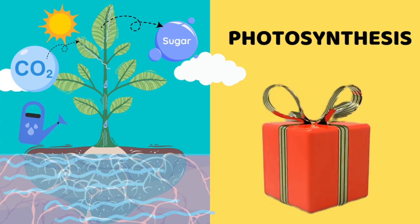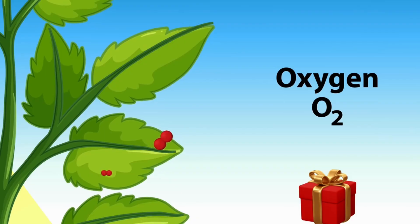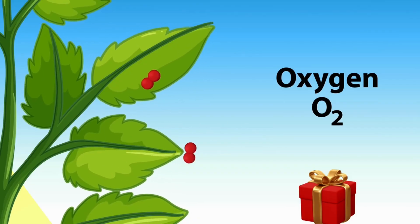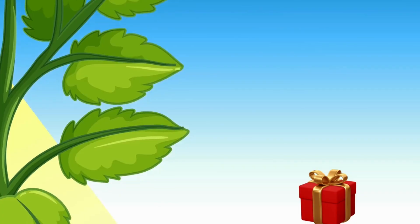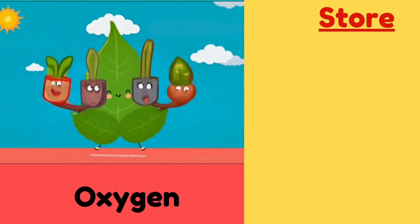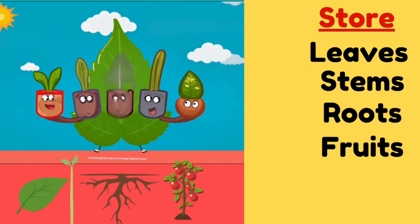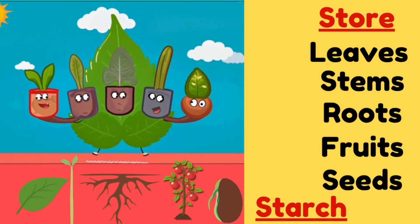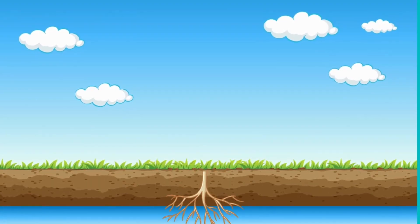Finally, let's see the bonus gift. While preparing food, the leaf also gives out oxygen through the stomata. We humans and animals need this oxygen to breathe. And what about the extra food? Plants can store it in leaves, stems, roots, fruits and seeds in the form of starch.